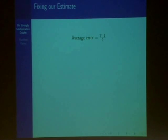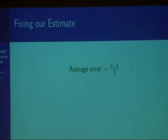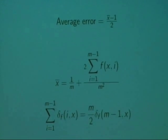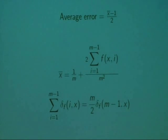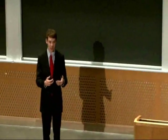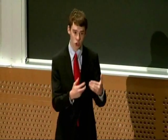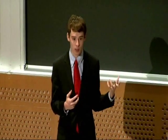We can determine that the average error is equal to (x̄ − 1)/2. We can obtain this from two lemmas, where m represents some arbitrary multiple of the least common multiple of [x]. Using these two lemmas, which are derived from the periodicity theorem, the symmetry theorem, and some recursive ways of obtaining delta_f(x, y) in terms of delta_f(x−1, y), we can obtain that the average error is (x̄ − 1)/2.